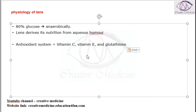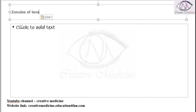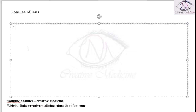The zonules of the lens are the suspensory ligaments that support the lens, and these are called the zonules of the lens.